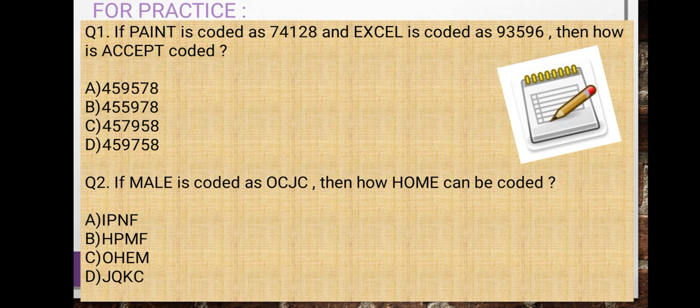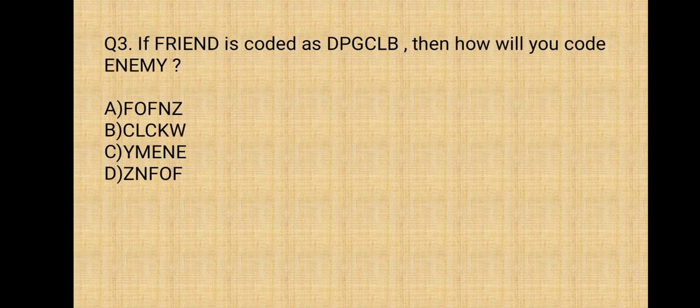If MALE is coded as OCJC, then how can HOME be coded? Question number three. If FRIEND is coded as DPGCLB, then how will you code ENEMY?